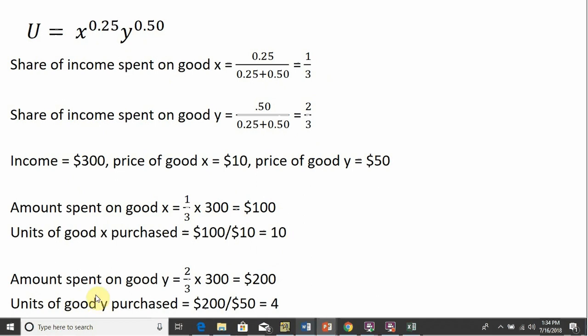The amount of income spent on good y is going to be two-thirds times the income, or $200. So the consumer is spending $200 on good y. Good y is priced at $50 a piece, so the consumer will be able to buy four units of good y. So this 10 and 4 represents the utility maximizing consumption bundle. Okay, I hope you found this video helpful.